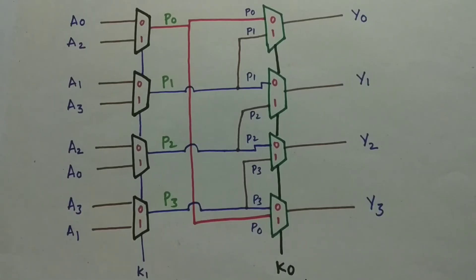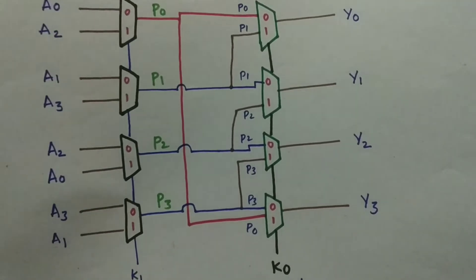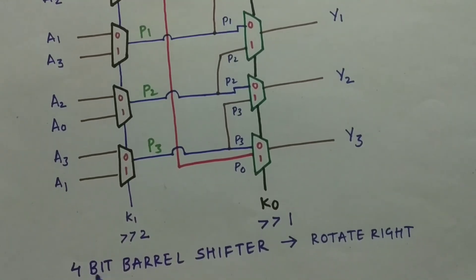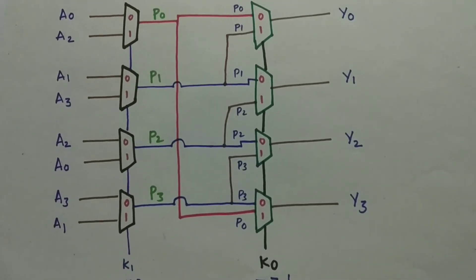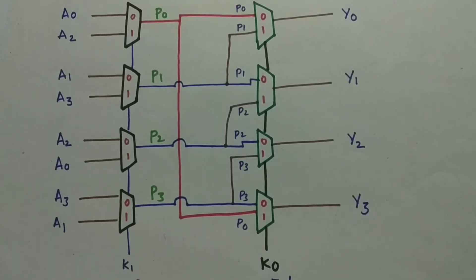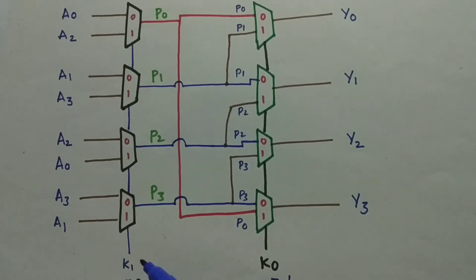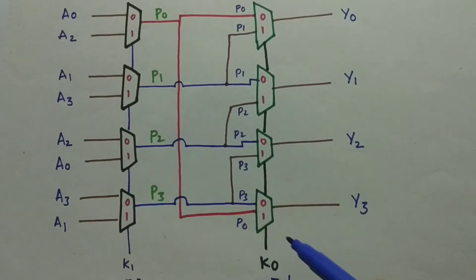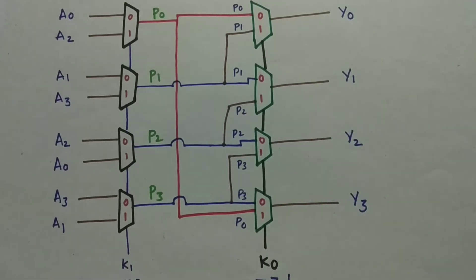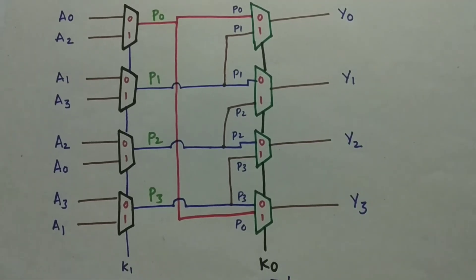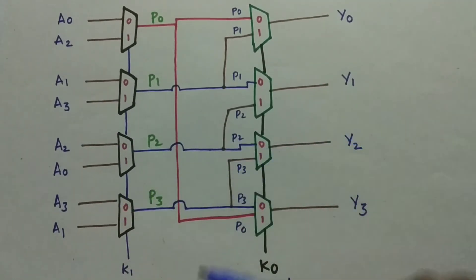Let us go with a 4-bit barrel shifter which is going to rotate right using 2-to-1 multiplexers. As you can see, we have 4 multiplexers on one side and 4 multiplexers on the other side. These multiplexers will each perform certain operations. K1 is the select line for the first group of multiplexers and K0 is the select line for the second group.